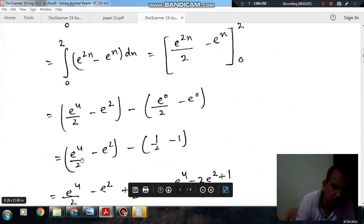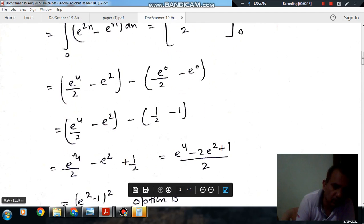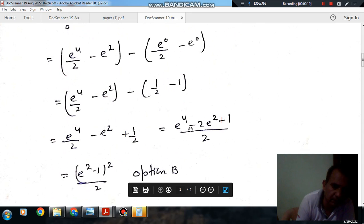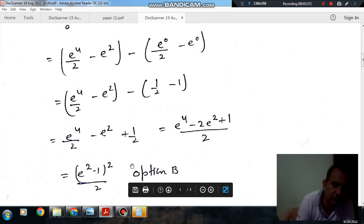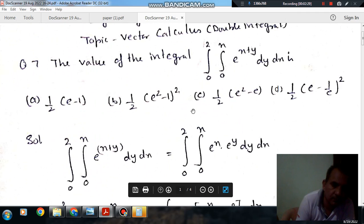So e⁴/2 minus e² minus (1/2 - 1), or e⁴/2 minus e² plus 1/2, or (e⁴ - 2e² + 1)/2. So this can be written as (e² - 1)²/2. So option B is the right answer.